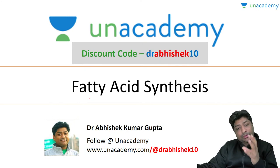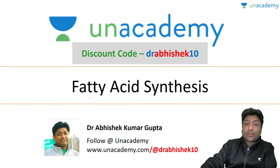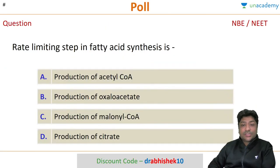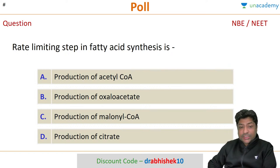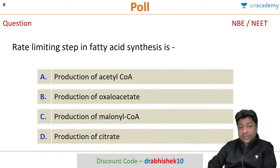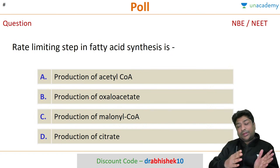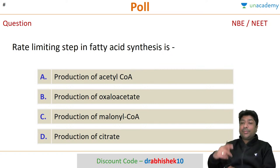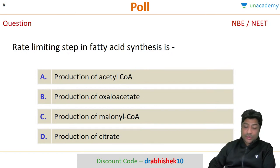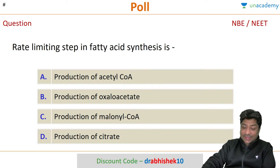Let's start with today's session on fatty acid synthesis. I'll take you through the complete concept, but first let's look at some questions that have come on this topic. First question: which of the following is the rate limiting step in fatty acid synthesis? Options are: production of oxaloacetate, production of malonyl CoA, or production of citrate.